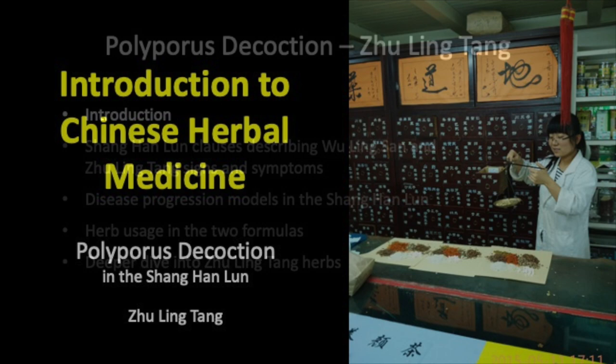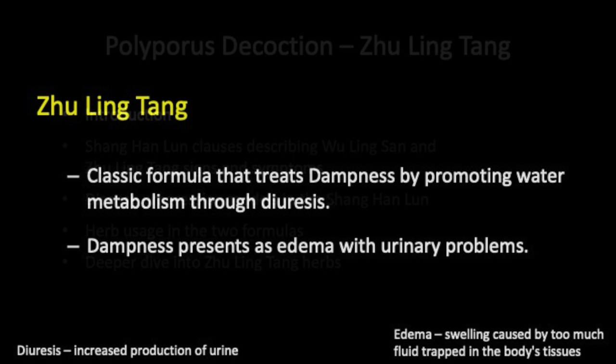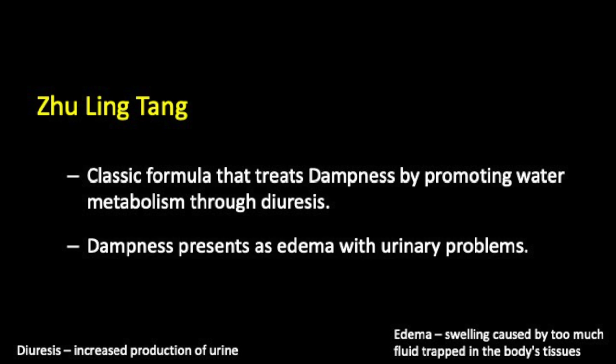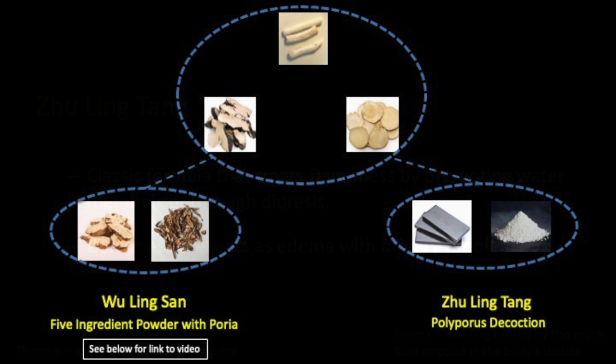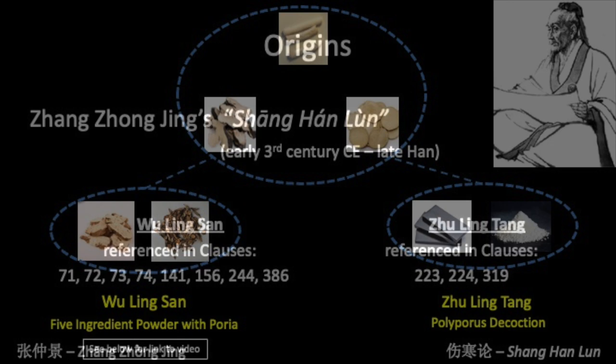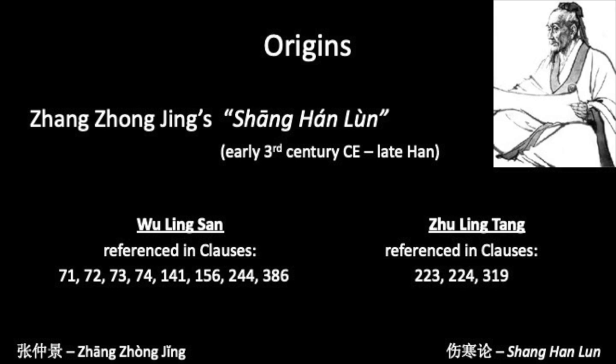Welcome to this brief video on Polyporous Decoction, or Zhu Ling Tang in Chinese. This classic formula treats dampness by promoting water metabolism through diuresis. The dampness presents itself as edema with urinary problems. This formula shares three herbs with Wu Ling San, a formula covered in a separate video. Both formulas appear in Zhang Zhongjing's classic Shang Han Lun, but Zhu Ling Tang is used in different circumstances to Wu Ling San.